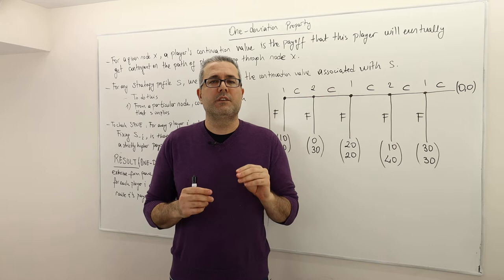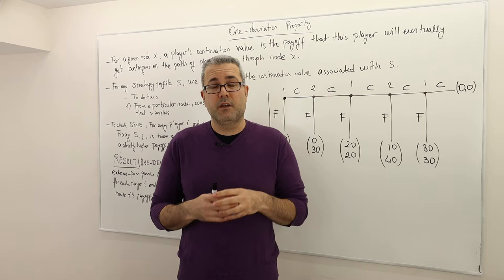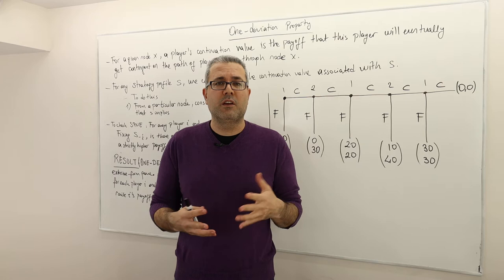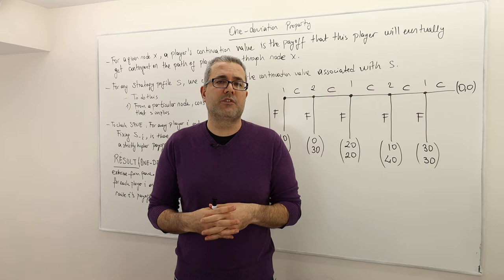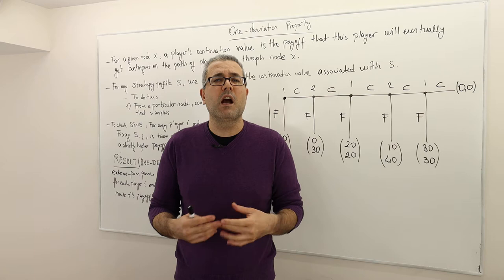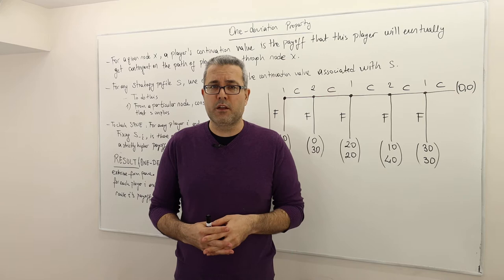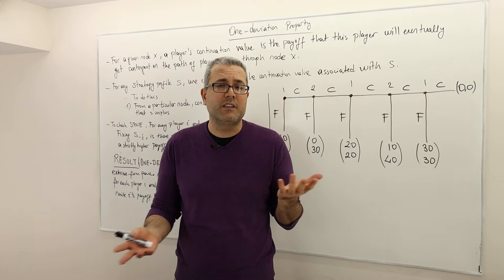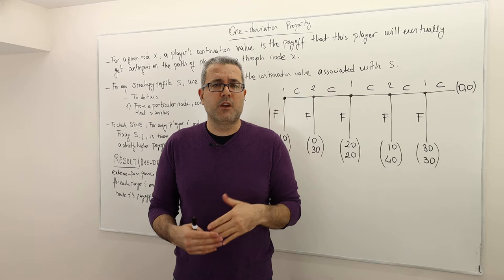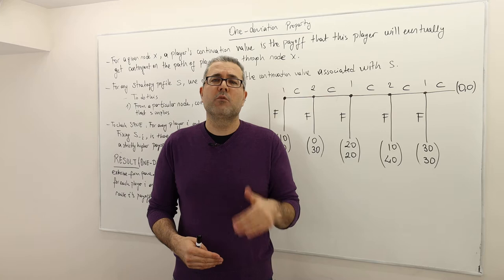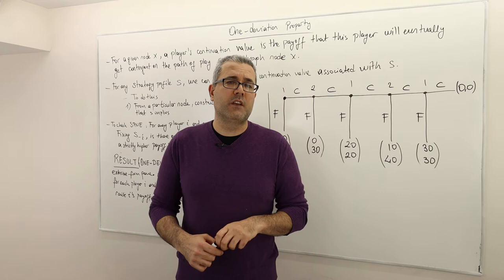Backward induction is the simplest tool to check whether a strategy profile or the outcome is a subgame perfect Nash equilibrium or not. But the thing is, with backward induction you cannot use it in every game, because sometimes the game can be very complicated. Later we're going to talk about examples where there are infinitely many subgames, or maybe the horizon of the game is very long — it doesn't end in two steps but continues like 110 steps. So backward induction is going to be very cumbersome, and a simpler way of checking whether a strategy profile is an SPNE is going to be a very useful tool.